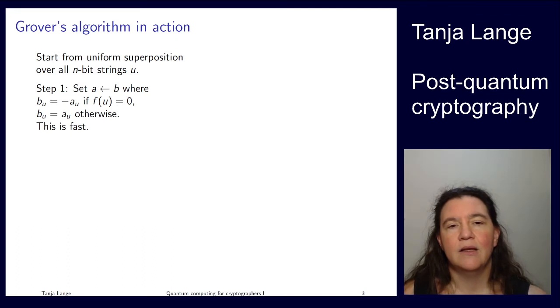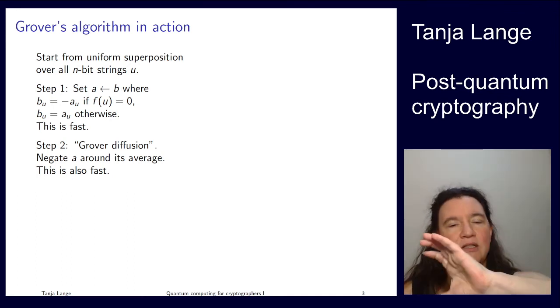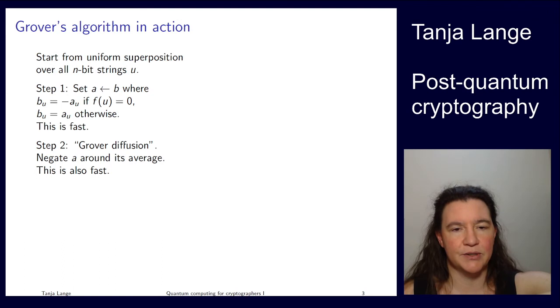We have negated one of the amplitudes, still one, so not having any change there yet. However, step two, and that is what we have seen in the quantum computing methods for cryptographers part two, is the negation around the average. That is actually changing how likely you are going to measure something. It is a fast operation. It is just a sequence of a few Hadamards and some mystery gates that you are going to figure out, and then some Hadamards.